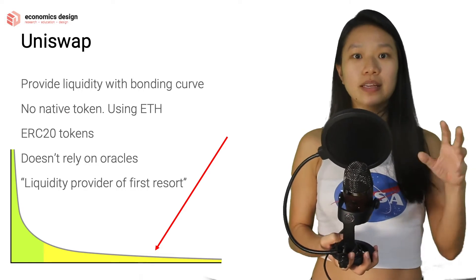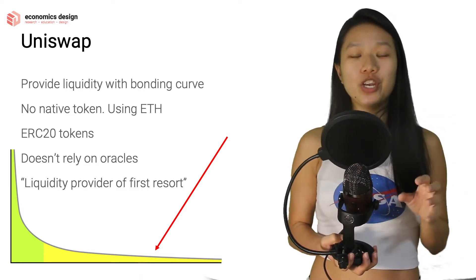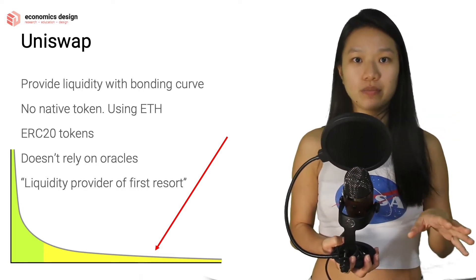Uniswap is similar to Bancor. The only difference is that Uniswap is only for ERC20 tokens, so only for Ethereum tokens.